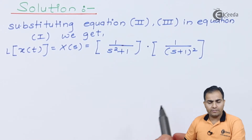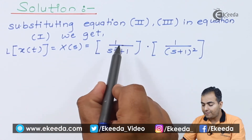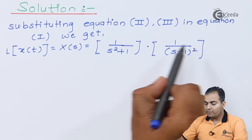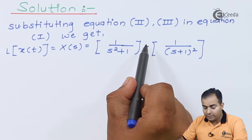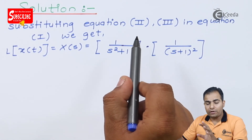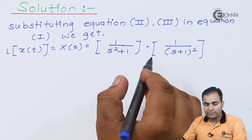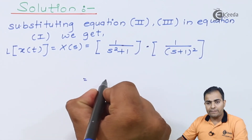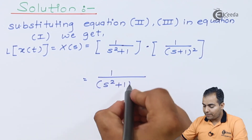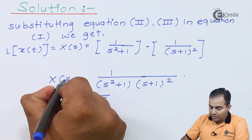Substituting equations 2 and 3 into equation 1, X(s) is the Laplace transform of x(t). The Laplace transform of sin(t)·u(t) is 1/(s²+1), and the Laplace transform of t·e^(-t)·u(t) is 1/(s+1)². Multiplying the numerators gives 1, so the final answer is X(s) = 1/[(s²+1)(s+1)²]. This is the answer to problem number 6.